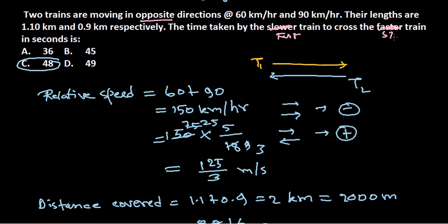The take-home message: when two trains are crossing in opposite directions, the relative speed is the sum of their individual speeds, and the total distance covered is the sum of the lengths of both trains.